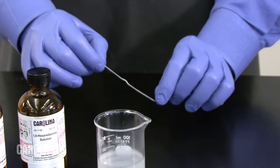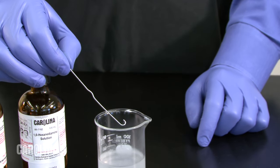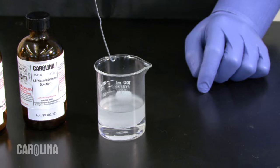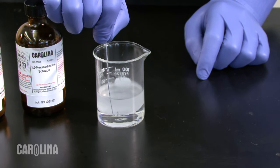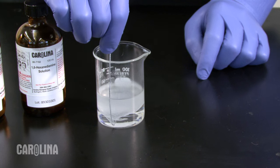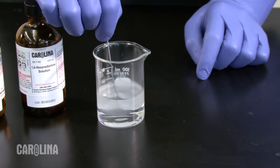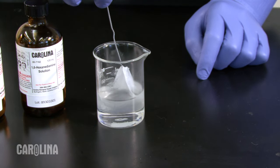We can extract our nylon using a wire with a small hook on the end, such as a bent paperclip. Lower the paperclip directly into the bottom layer and pull up slowly past the interface. You will observe a strand of nylon being pulled out of the solution.